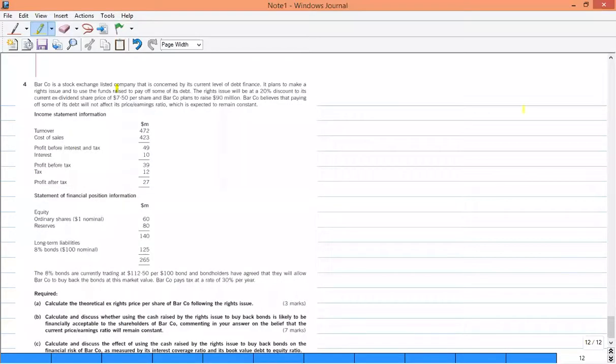Now look at this question. What is the requirement? The first requirement is calculate the theoretical XR price per share following the right issue. What did we do in the last class? How do we get the share price? XR price. The company is a stock exchange listed company that is concerned by its current level of debt financing. It plans to make a right issue and to use the funds raised to pay off some of its debt.